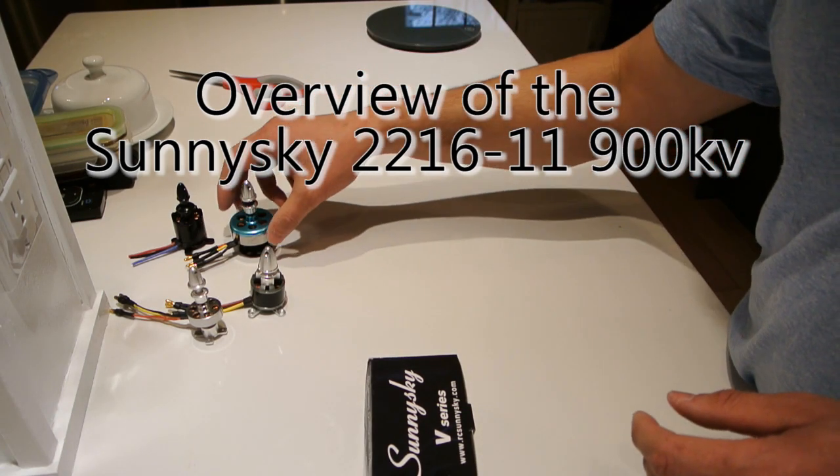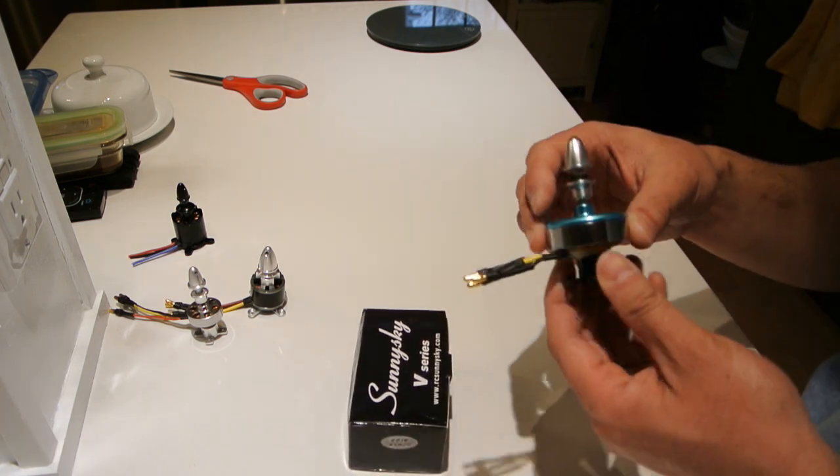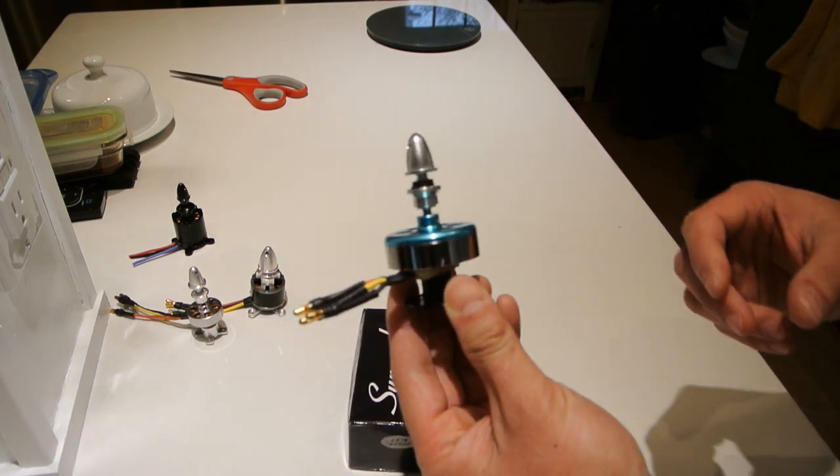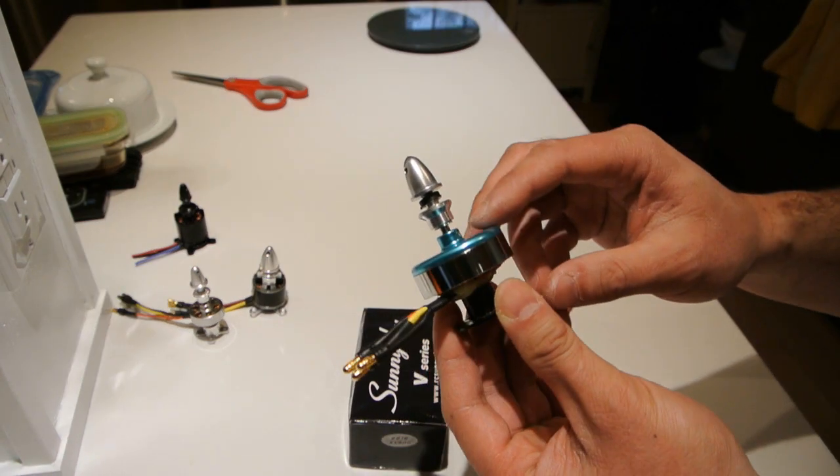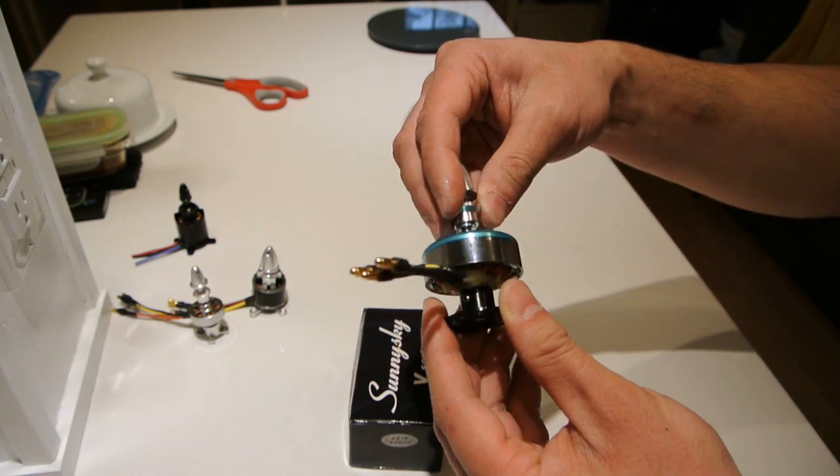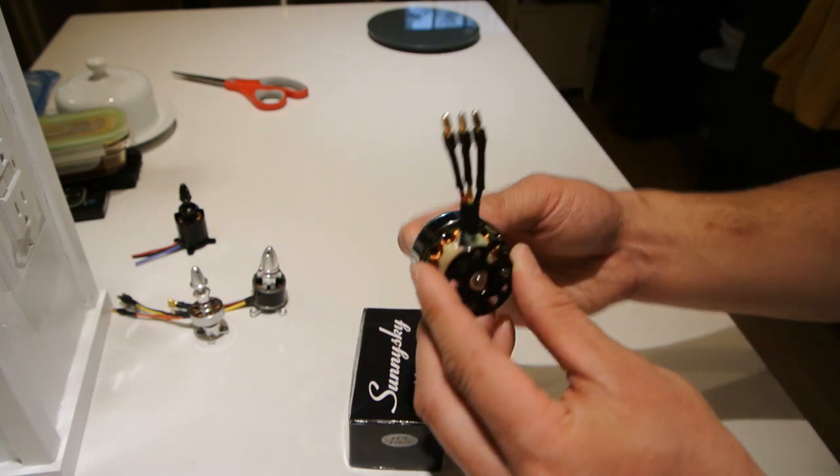I'm looking to upgrade the motors on my tricopter. Currently I run a DT750 on it. As you can see on this one, I changed the shaft out and put a smooth shaft on it so I could put a prop adapter on it.